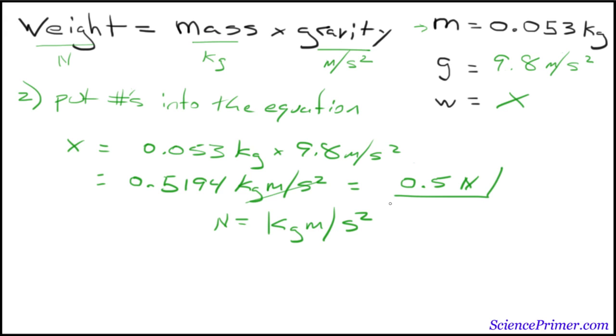So, the answer to this example problem is 0.5 newtons, which is the buoyancy force of an object that displaces 53 grams of water. That completes the demonstration. Follow the link below to go back to the problem set. And please feel free to contact me if you have any questions.